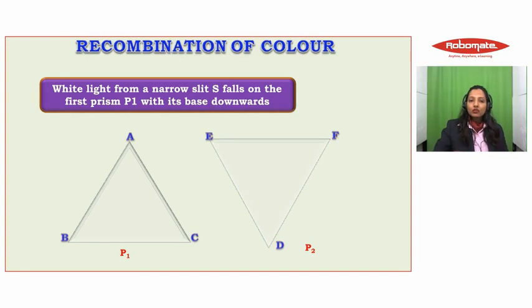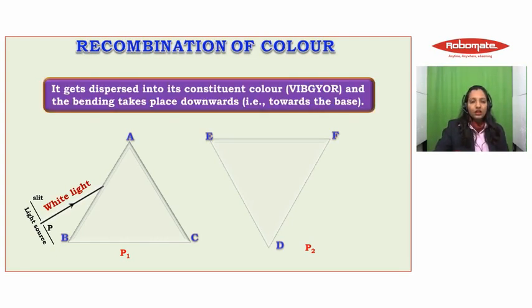When white light from a narrow slit S falls on the first prism P1 with its base downwards, it gets dispersed into its constituent colors and bending takes place towards the base.